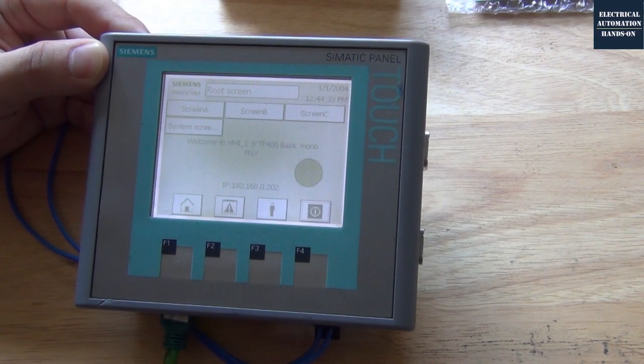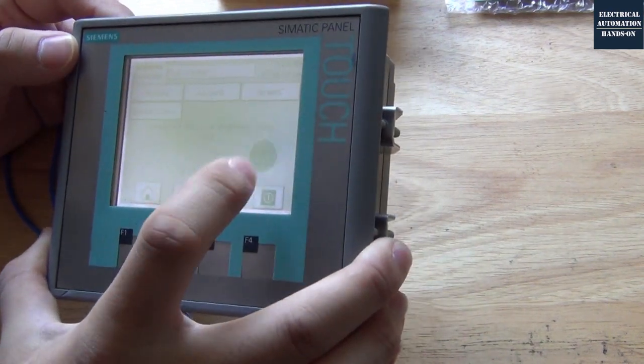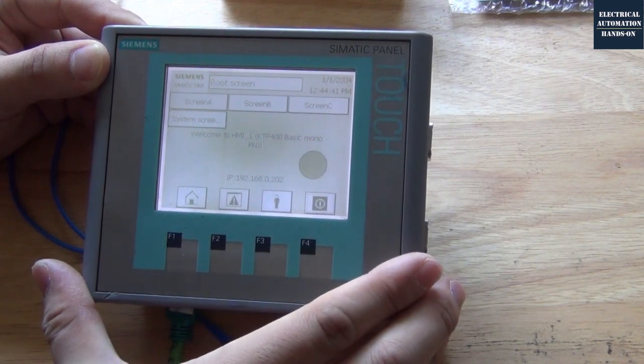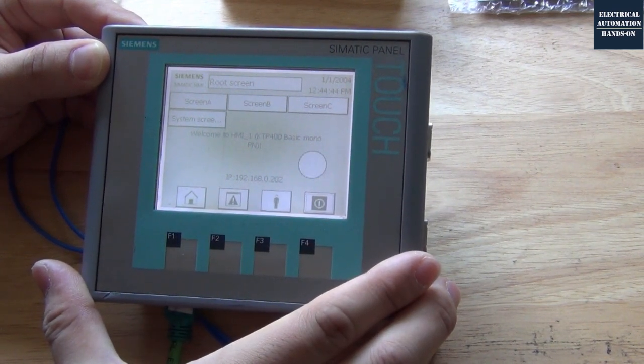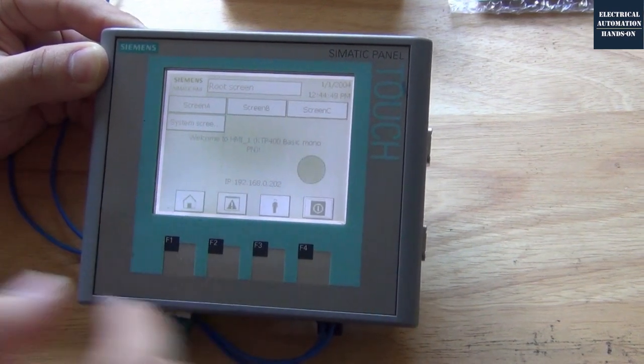Hello everyone. Today I would like to share this fix process. I'd like to fix this HMI panel touching problem. This is a Siemens KTP 400 monocolor HMI, a touch screen, however now it's not working properly.